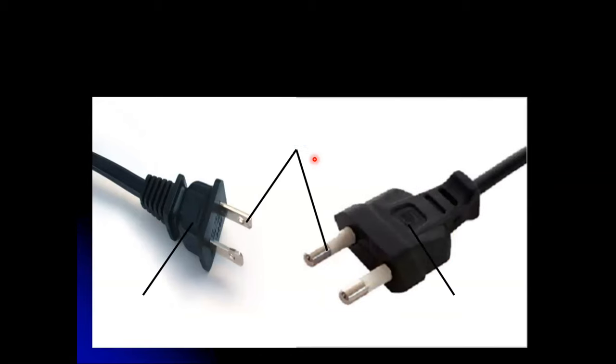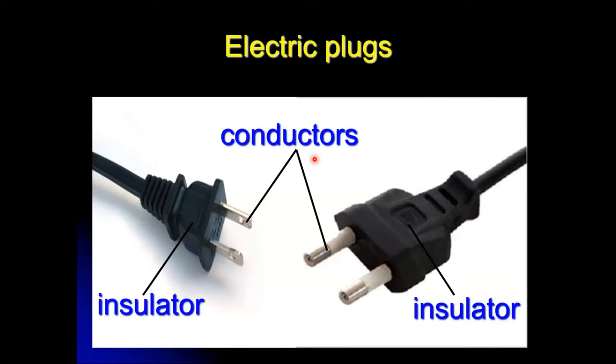So this is electric plugs. Electric plugs are also made up of insulator and conductors. The black parts of electric plug are insulators which you can touch and hold. And the metal are conductors where electricity is flowing through it.